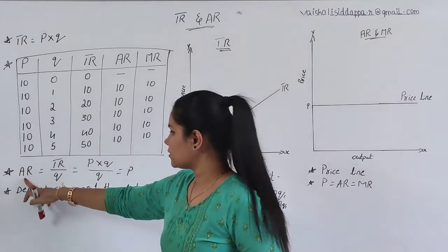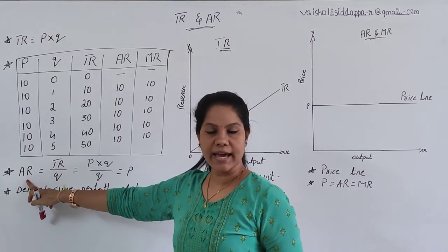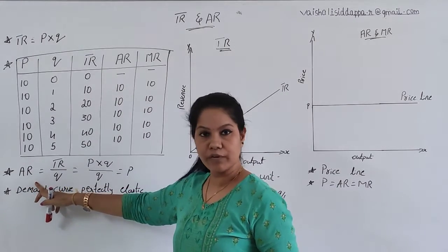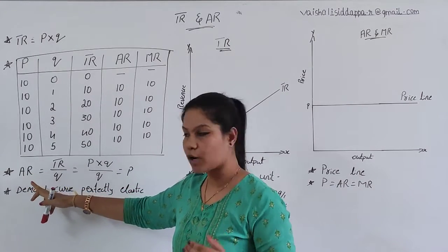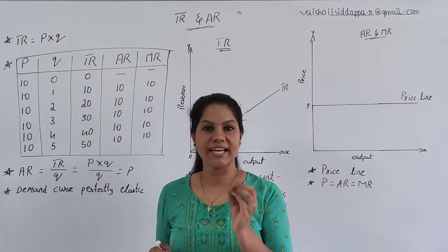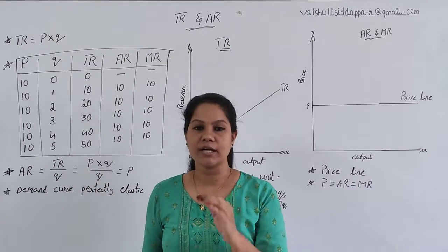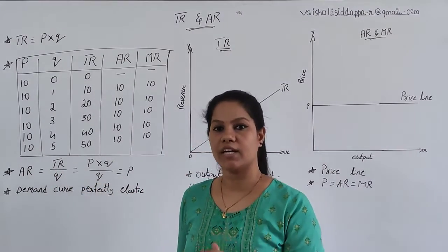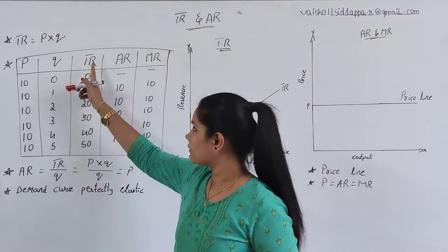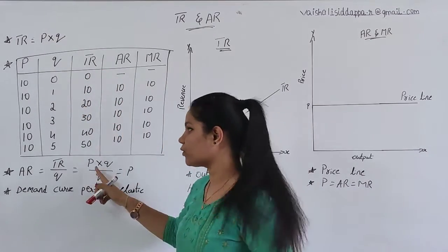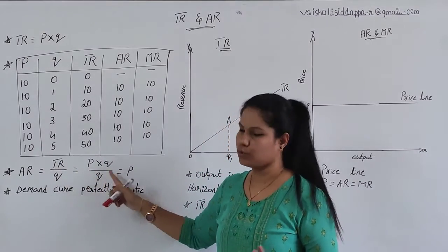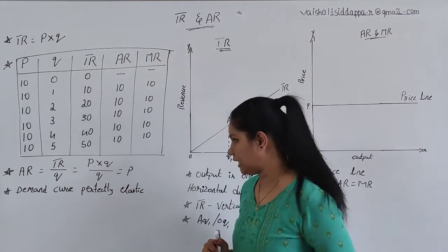For the next formula, AR is nothing but average revenue. To find out AR, you have the formula which is TR divided by Q — total revenue divided by quantity — which will give you average revenue. At the same time, since TR is P into Q, dividing by Q gives you P. So AR equals P.